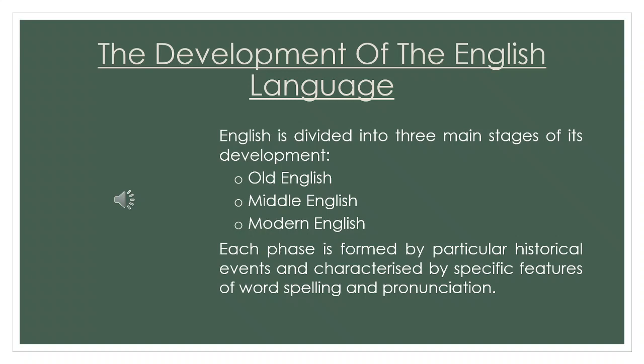The history of the English language is a complicated one, mainly because it is inevitably linked with the history of Britain and its inhabitants. Languages, like populations, are influenced by wars, invasions, immigration, trade, and many other factors. But to simplify, we often divide the history of English into three main phases. During the 5th century, Britain was invaded by Germanic tribes from mainland Europe — the Angles, the Saxons, and the Jutes.